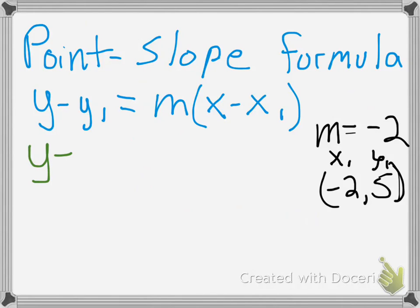y minus. Well, what's y1? y1 is 5 equals. m is negative 2. Parentheses x minus x1, which is negative 2. Be careful with signs.